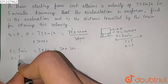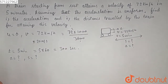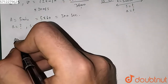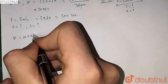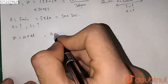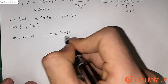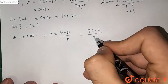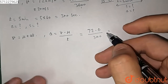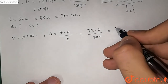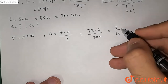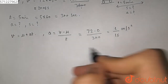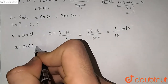We have to find the acceleration and the distance. Now we know that v is equal to u plus at, so from here we can get the acceleration. Our acceleration will be equal to v minus u over t, so here that is 20 minus 0 over 300, which is equal to 1 over 15 meter per second squared, which is equal to 0.06 meter per second squared.